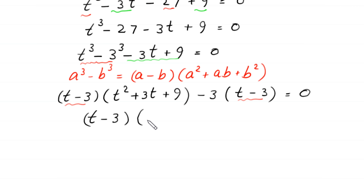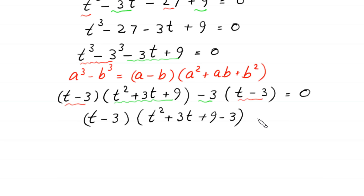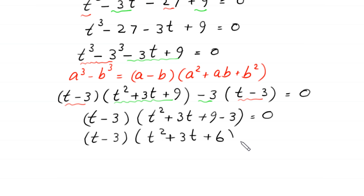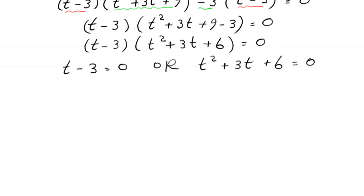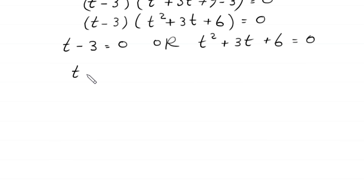Now, t minus 3 is common in both terms. So, we factor out t minus 3. In the bracket we have t squared plus 3t plus 9 and negative 3, giving t minus 3 times t squared plus 3t plus 6 is equal to 0. From here, t minus 3 equals 0, so t is equal to 3.